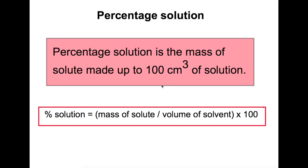Hi and welcome back to my channel. Today we're going to look at three types of calculations that you can be asked to do relating to the pharmaceutical part of advanced higher chemistry. The three types of calculation we're going to look at are percentage solution, percentage by volume, and parts per million.